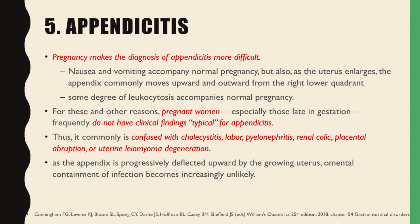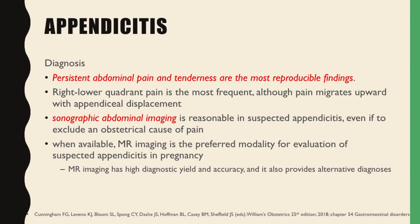Thus, appendicitis commonly is confused with cholecystitis, labor, pyelonephritis, renal colic, placental abruptio, or uterine myoma degeneration. As the appendix is progressively deflected upward by the growing uterus, omental containment of infection becomes increasingly unlikely. Persistent abdominal pain and tenderness are the most reproducible findings. Right lower quadrant pain is the most frequent, although pain may migrate upward with appendix displacement, especially during later stages of pregnancy. Sonographic abdominal imaging is reasonable in suspected appendicitis, even if to exclude an obstetrical cause of pain. When available, MRI is the preferred modality for evaluation of suspected appendicitis in pregnancy, as it has high diagnostic yield and accuracy and also provides alternative diagnoses.